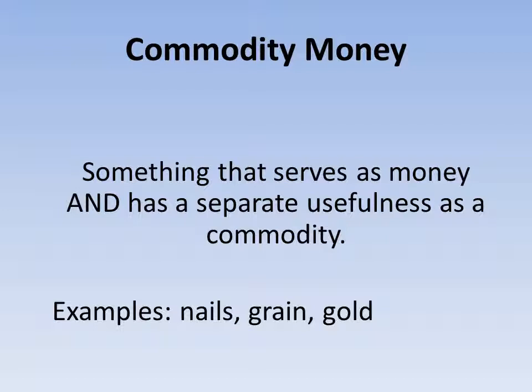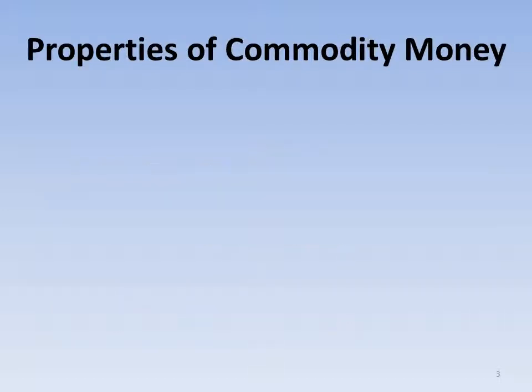In order for something to work as commodity money, it needs to have a handful of properties. The first property is it needs to be durable. Livestock doesn't make a very good source of commodity money because it can die, and that doesn't work well if it's a store of value. So durability is important — something that doesn't rot or die or perish.